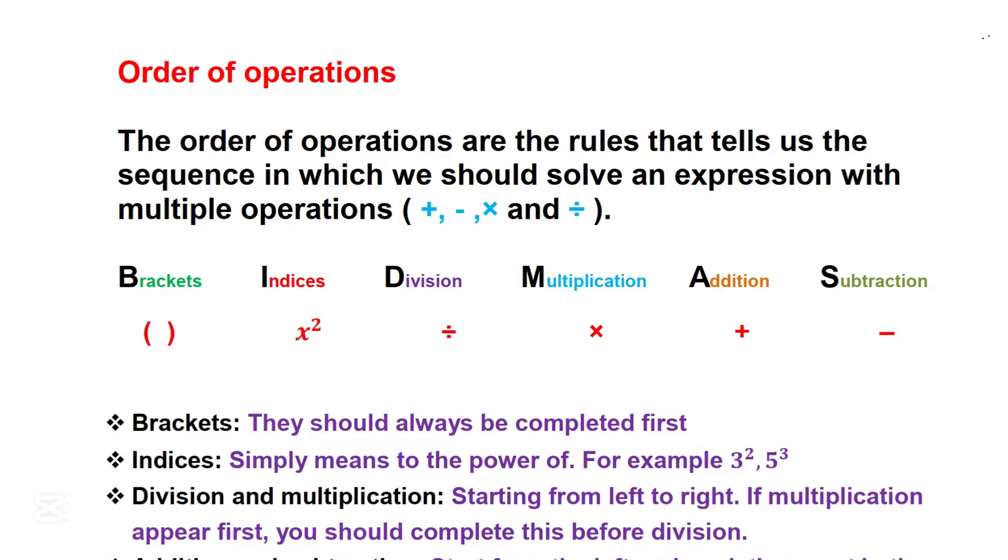The order of operations are the rules that tell us the sequence in which we should solve an expression with multiple operations. When you're carrying out more complicated calculations involving more than one operation, such as addition, subtraction, multiplication, and division, you're expected to follow a sequence of rules, and this rule is known as BIDMAS.